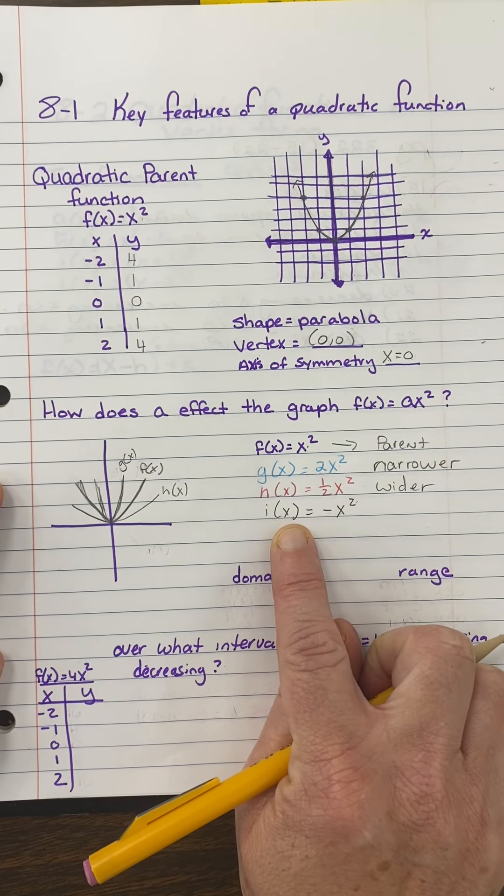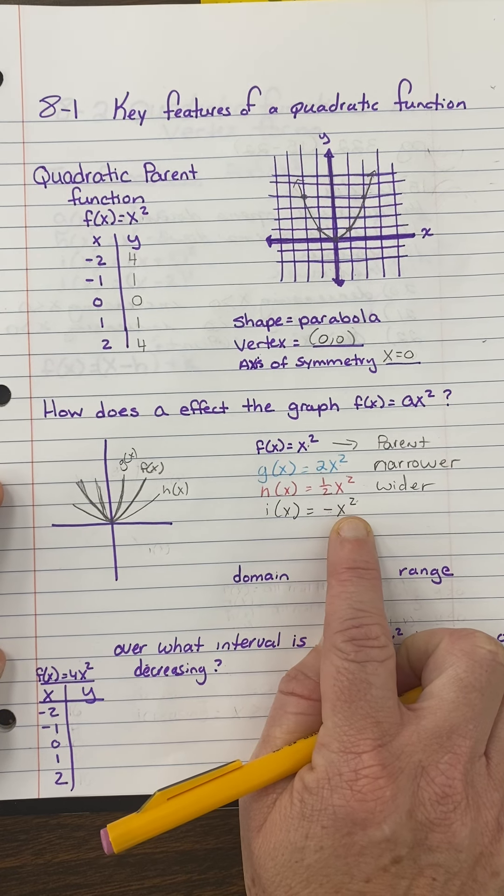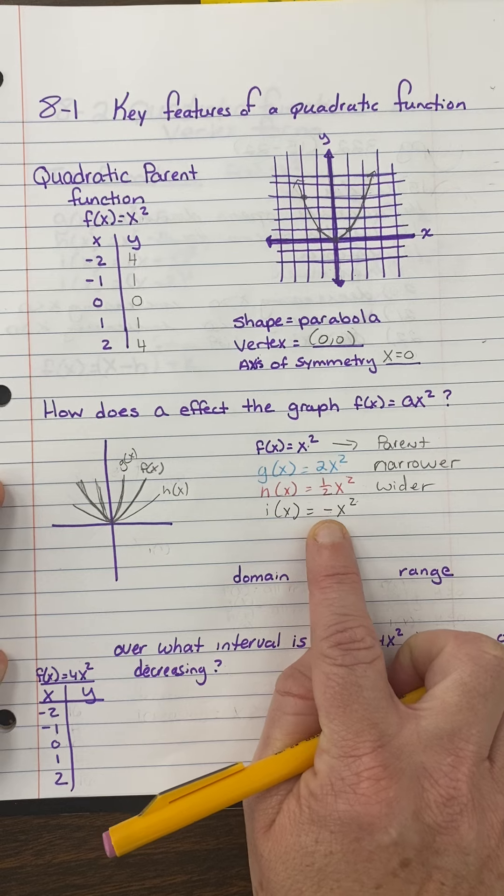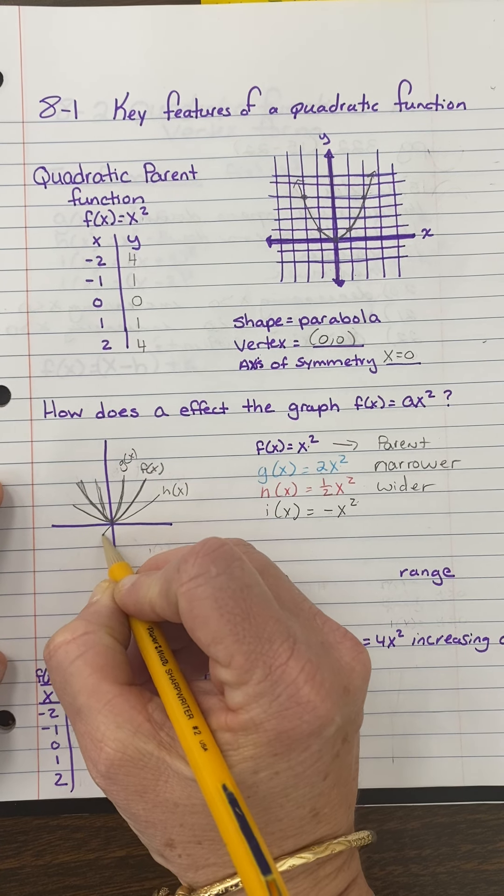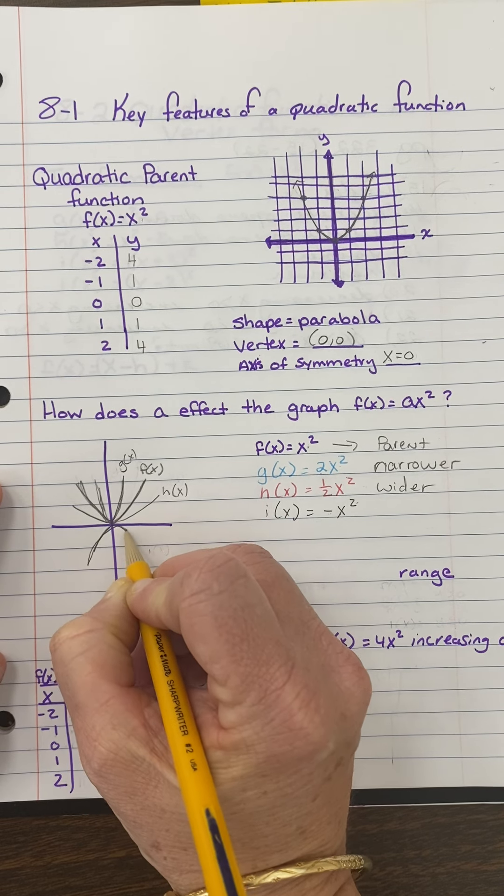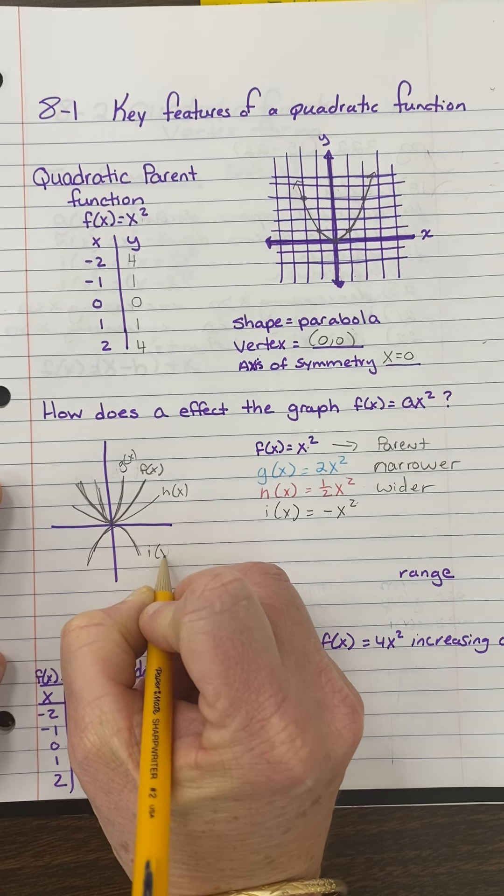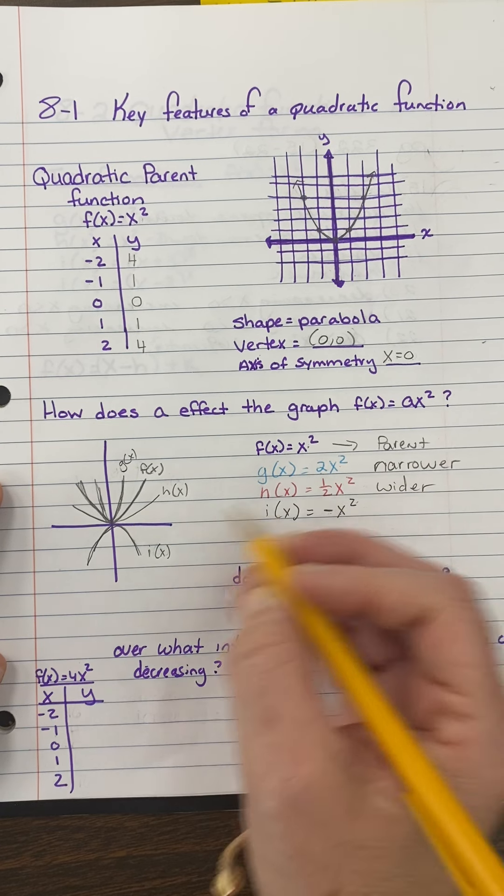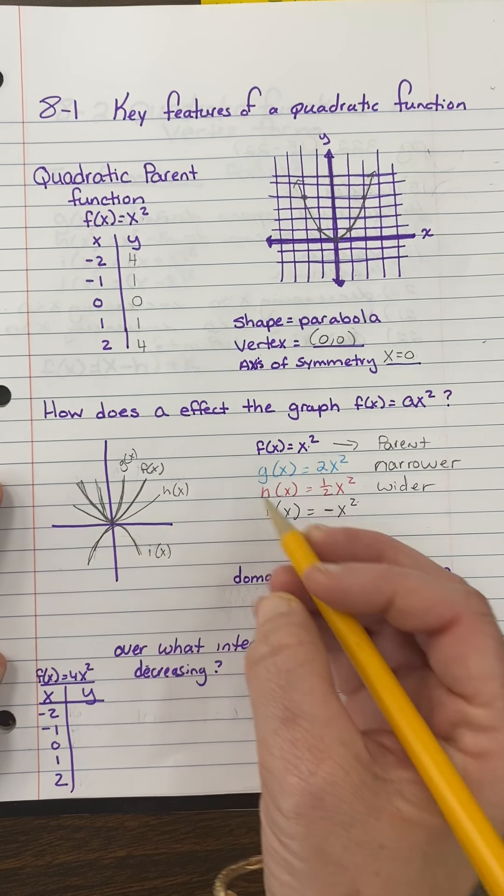All right. So let's talk about what's happening here. Well, this looks exactly like the parent function, except it has a negative in front of it. So that just means it gets reflected. That's i of x. So now it flips over. So if you see a negative in front of x squared, it's going to be going this way.